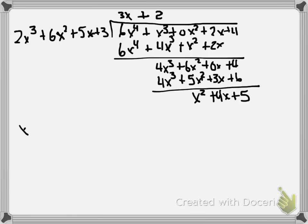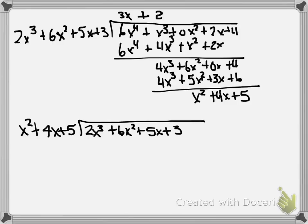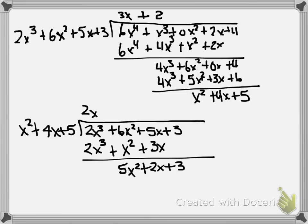So now we're going to divide x^2 + 4x + 5 into 2x^3 + 6x^2 + 5x + 3. We need a 2x in the quotient to get us started. And then that multiplies out to give us 2x^3 + x^2 + 3x. We subtract, we're left with 5x^2 + 2x + 3. And now we need a plus 5 in the quotient. So we get 5x^2 + 20x, that's 6x, plus 25, that's 4. Leaves us with a remainder of 3x + 6.